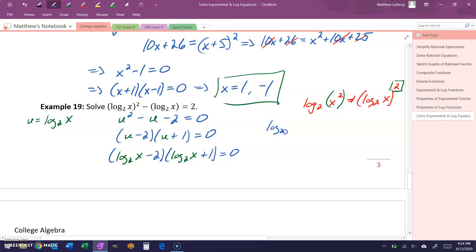The first one would be log base 2 of x minus 2 is equal to 0, or we can just set that logarithm equal to 2. For the log base 2 of x, we would get 2 to the second power, or 4, is equal to x.